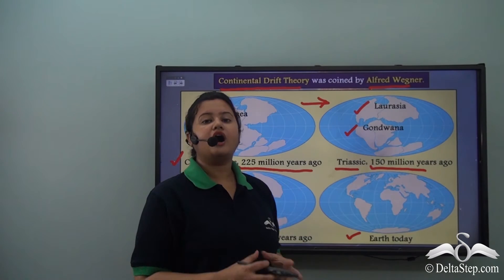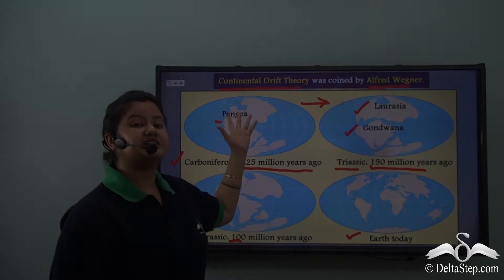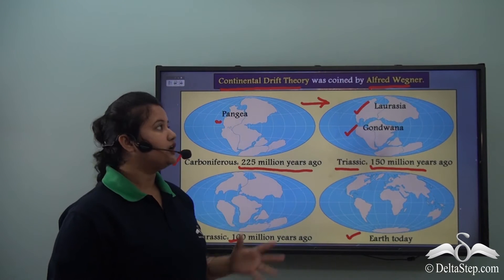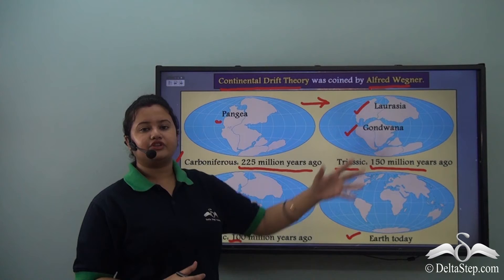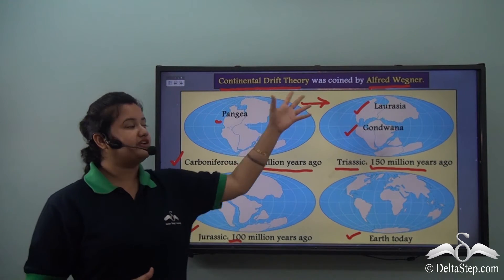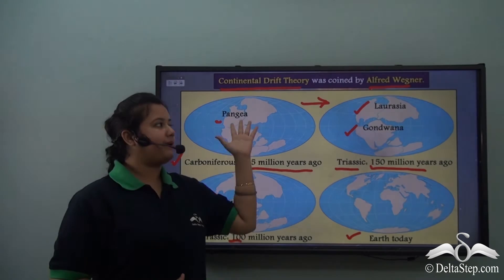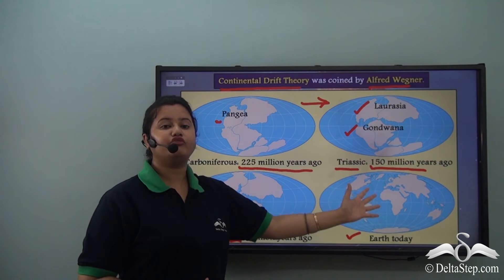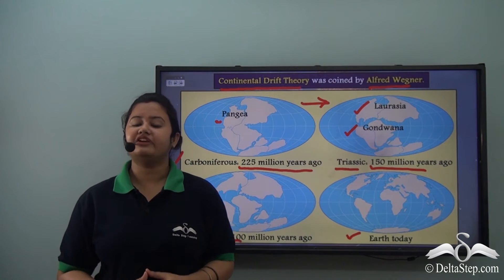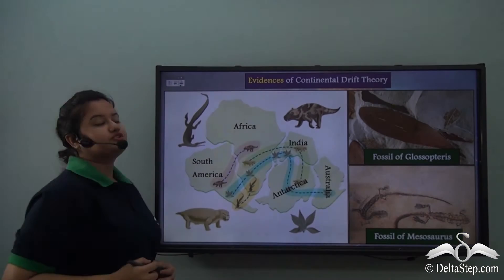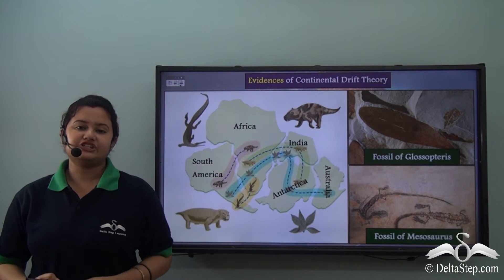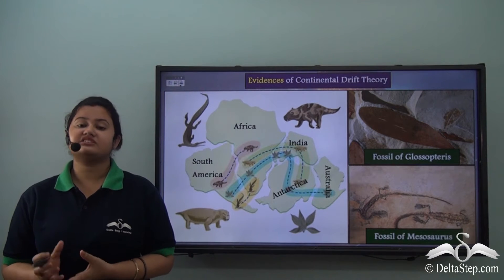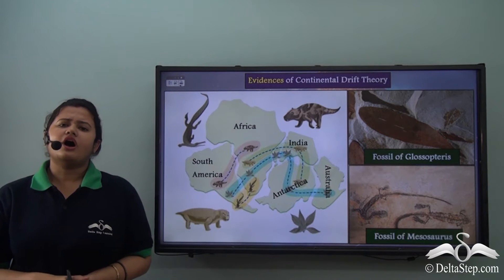This is how our Earth looks today. But millions and millions of years ago, our Earth looked like this. The Continental Drift Theory framed by Alfred Wegener defines how Pangea gradually fragmented and led to the formation of our new world where we live in today. Now we know that initially our continents were not like this as we see them today.